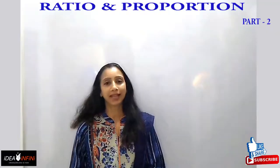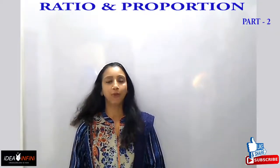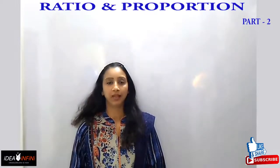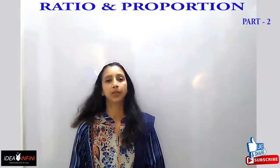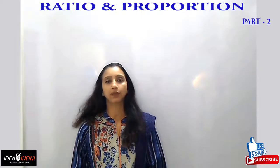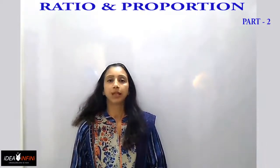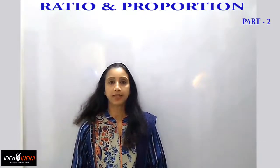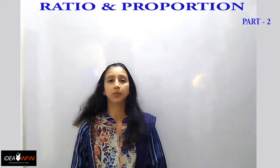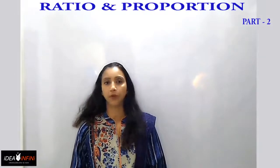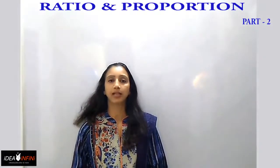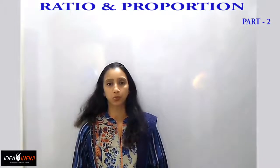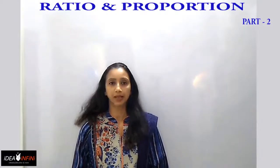Welcome to the second session of ratio and proportion. Ratio means how many times one quantity is that of the other. For example, if one person has 70 mangoes and the other has 140, then 70 is to 140, which is the ratio 1 is to 2. This is what I had explained in the earlier part.